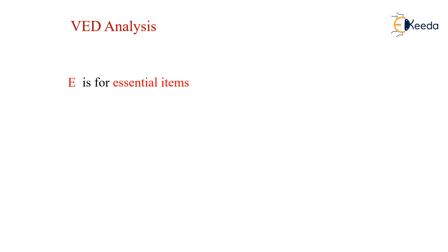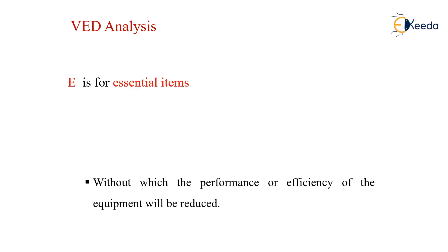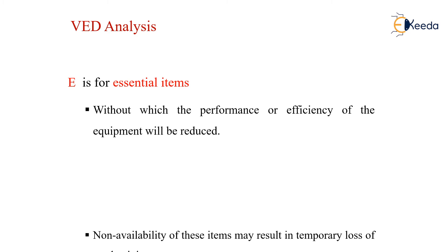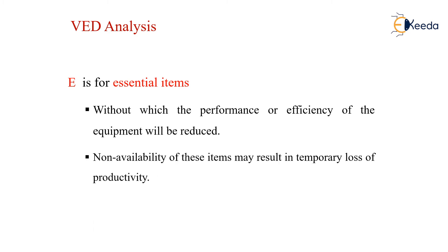E stands for essential items. Without these, the performance or efficiency of the equipment will be reduced, like the lubricating oil or the 4T and 2T oil which we generally utilize in our engines. Non-availability of these items may result in a temporary loss of production.